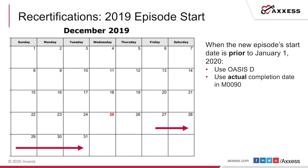Now let's look at recertifications. If you have a 2019 episode start date and you're doing a recert, when the new episode start date is prior to January 1st, 2020 — meaning the from-date on your episode — you're going to use the OASIS D and use the actual completion date in M90.